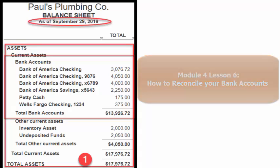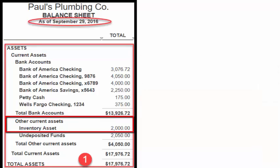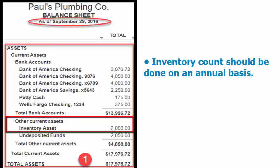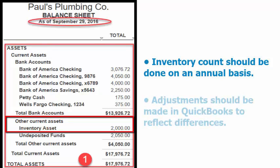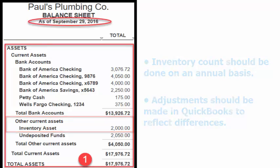Next, we've got inventory. This is the value of Paul's inventory on hand as of September 29th, 2016. To ensure accuracy, an inventory count should be done on an annual basis. An adjustment should be made in QuickBooks to reflect any differences between the inventory that you have on the shelf compared to what is in QuickBooks.